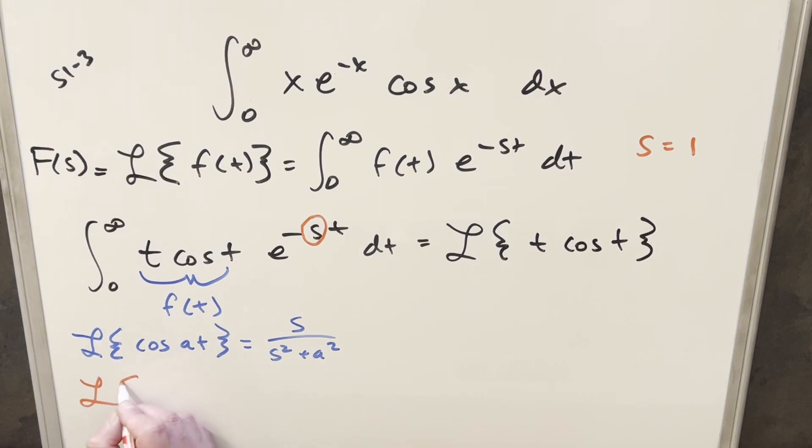But then what about this t right here? Well, we have another formula for that, for the Laplace transform, for just general when we have t times some function f of t. I actually just derived this recently in another video. I'll provide a link in the description to that. But our formula for this is just going to be minus the derivative with respect to s of big F of s, where big F of s is actually just the Laplace transform of this f of t right here.